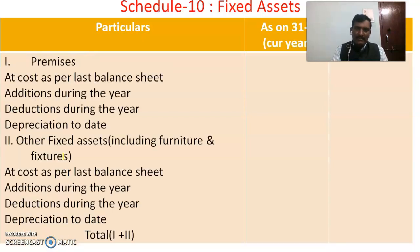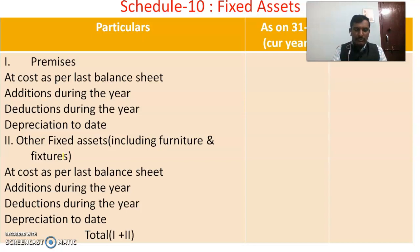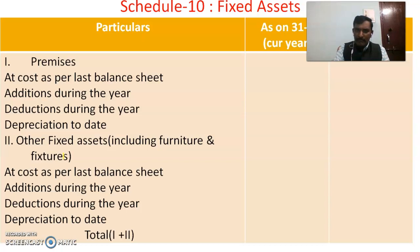Schedule 10 covers Fixed Assets such as premises. These are taken at cost as per the last balance sheet, with additions during the year added and any deductions or depreciation to date adjusted. Other fixed assets including furniture and fixtures are also taken at cost per the last balance sheet, with additions and deductions or depreciation adjusted accordingly. The total is taken to the balance sheet as Schedule 10 Fixed Assets.